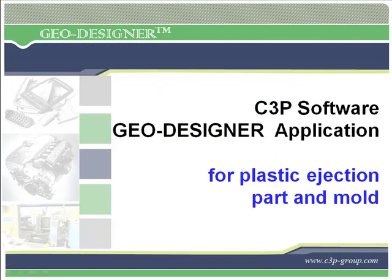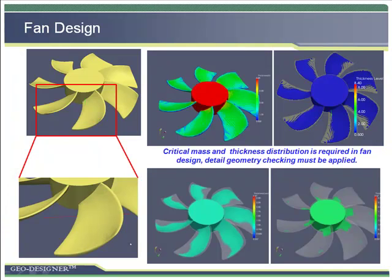Now we look at a few applications for the plastic ejection process, to study the use and benefit of GeoDesigner for that. Fan design is critical in both mass distribution and thickness — it is not only a quality requirement but also a functional requirement. So detailed geometry analysis must be applied, and GeoDesigner can be used for that.